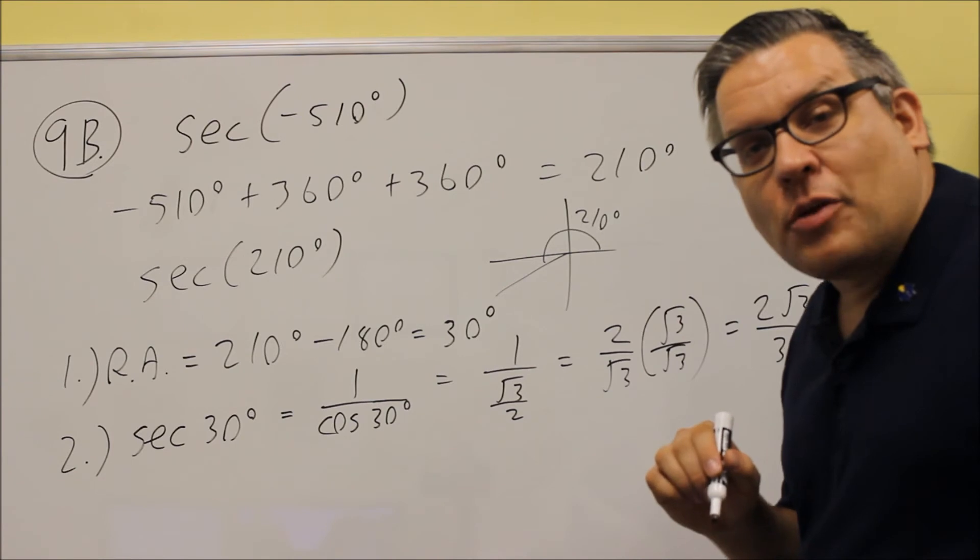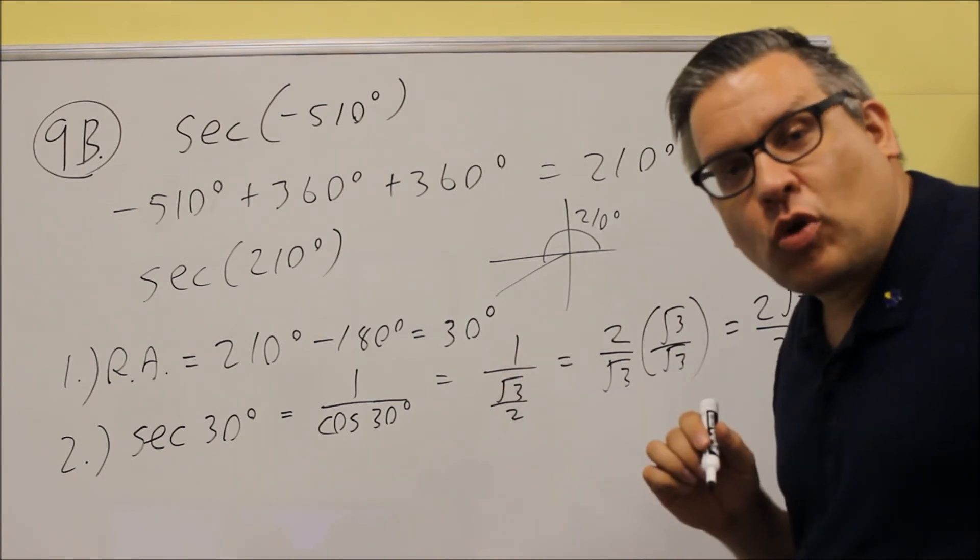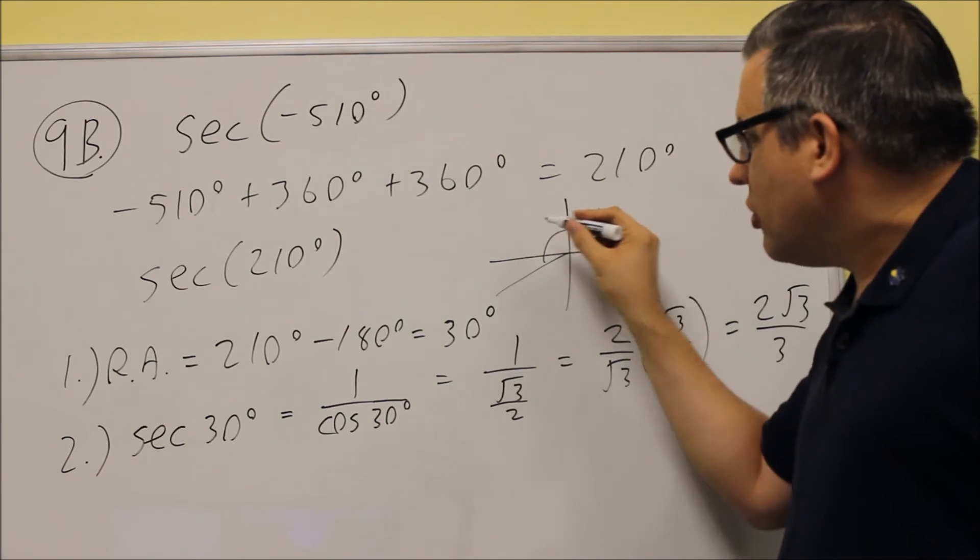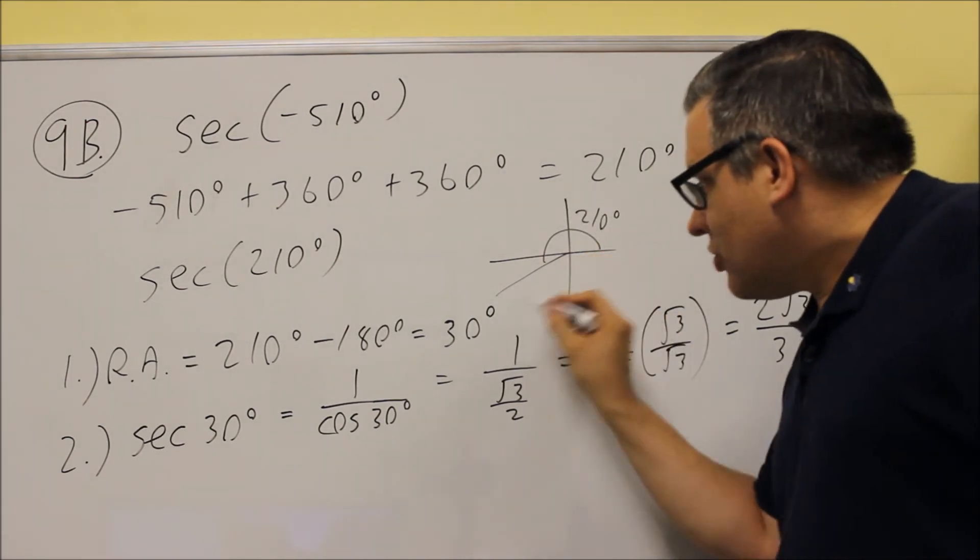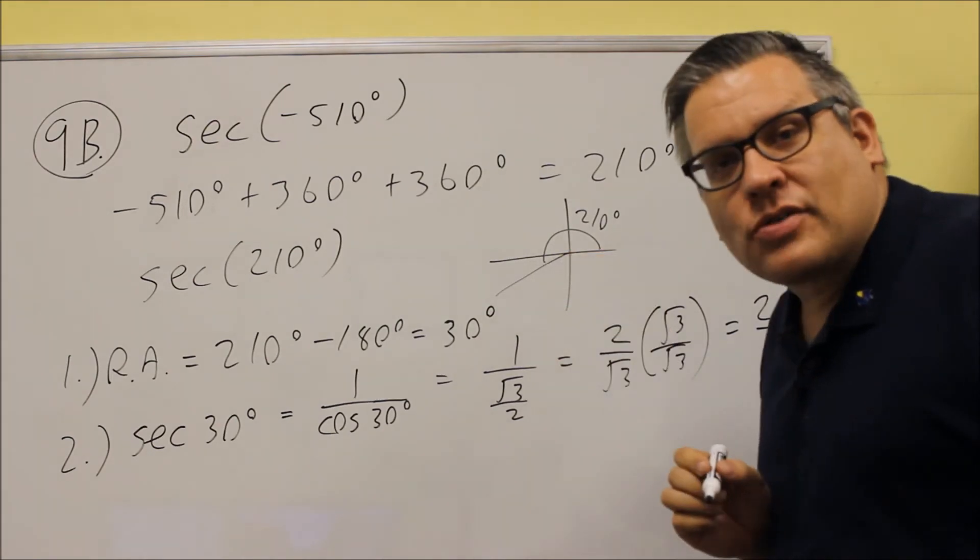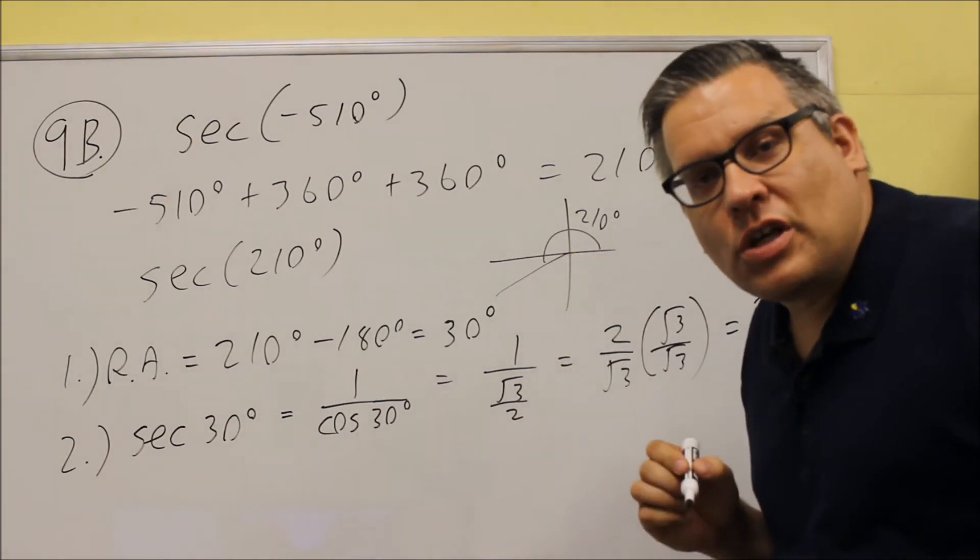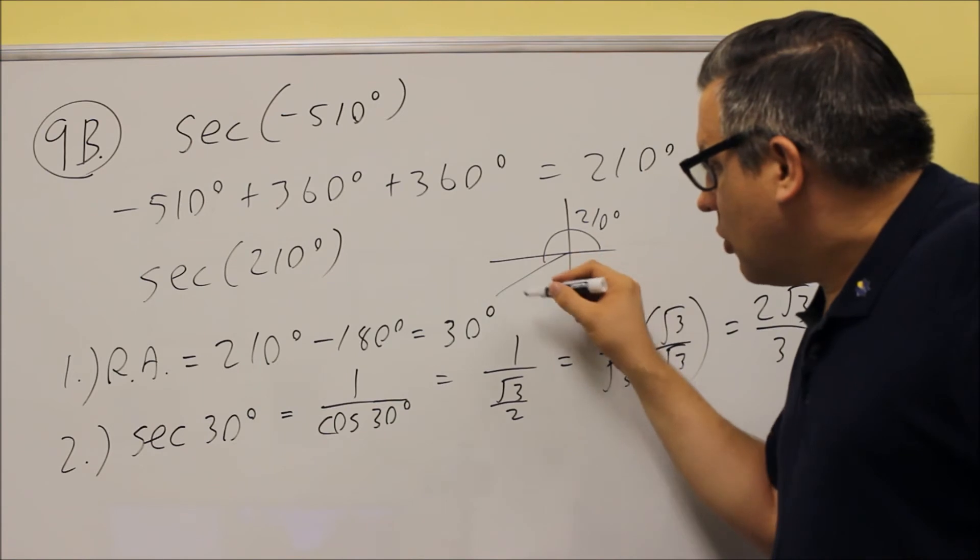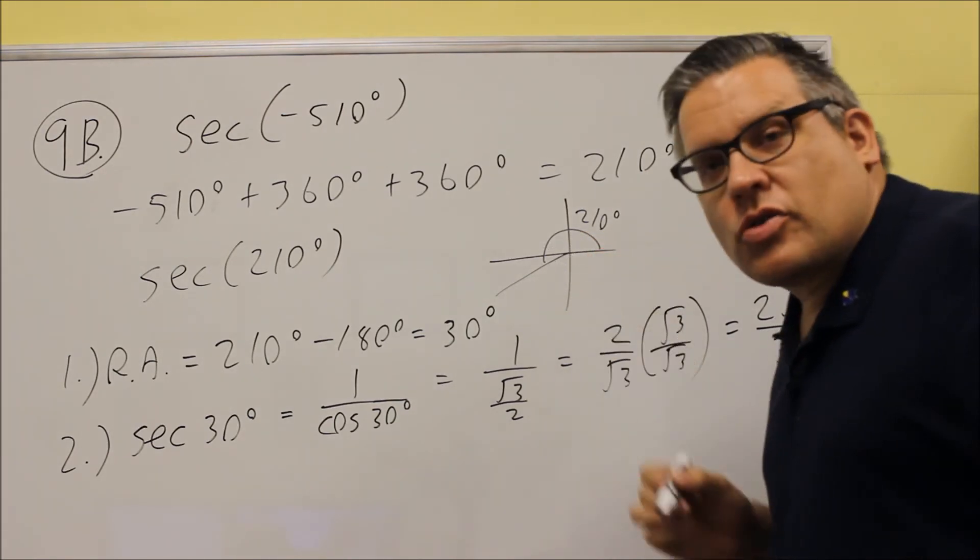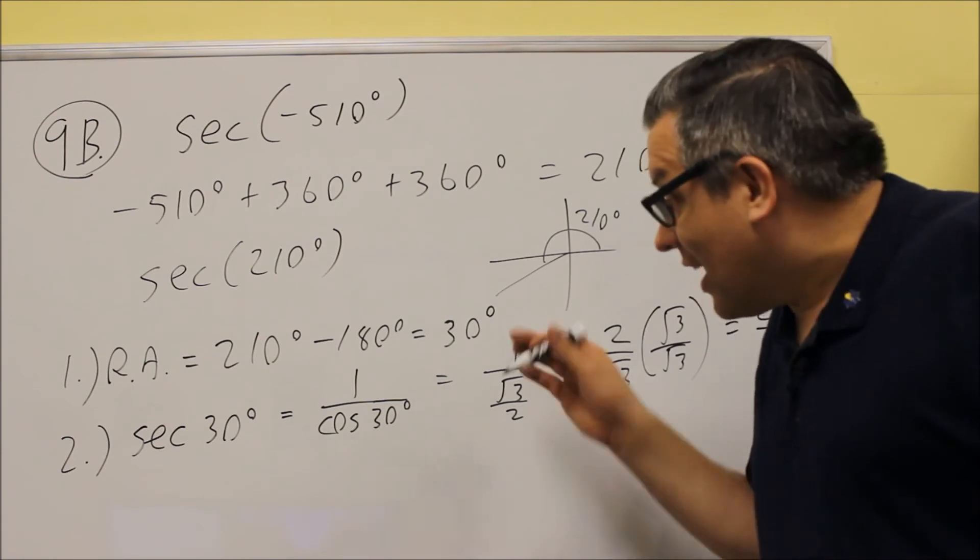Now the last step is we have to apply the appropriate sign depending on what quadrant that we're in. We're in the third quadrant. So we have all students take calculus. Take represents, the T represents tangent. Tangent would be positive, but everything else is going to be negative. So what else is negative there is going to be cosine. So cosine is going to be negative.